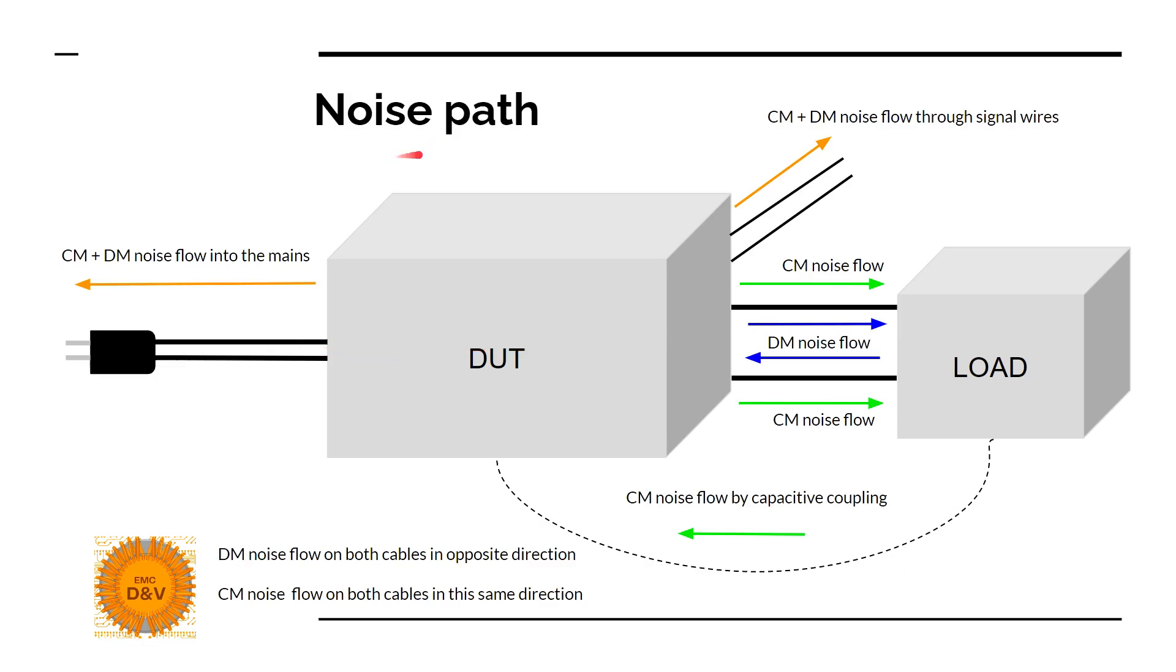Noise path. We can see our DUT, device under test, and our load, for example a controller and a motor or a controller and a display. On the input power wires of the device, the common mode plus differential mode noise flow into mains, and here we need to have lower noise than specified limit lines. We also will have noise coming out of the signal wires.